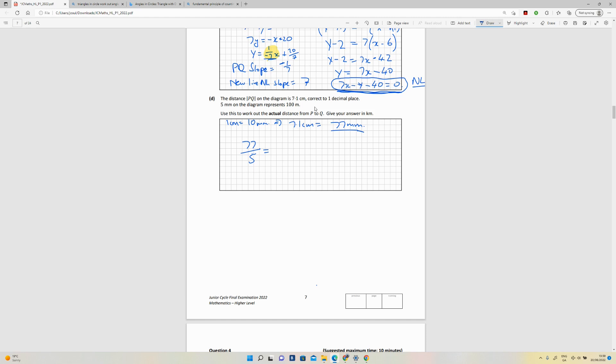If I divide 5 into that, I'm going to get 14.2. So that's basically units of 100 meters. So now I want to multiply that by 100 meters. And if I do that, I'm going to get 1.42 kilometers.